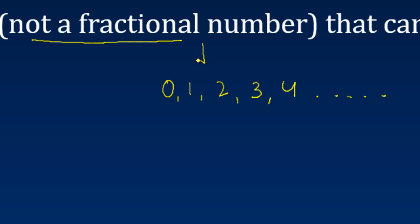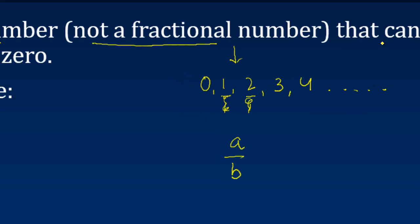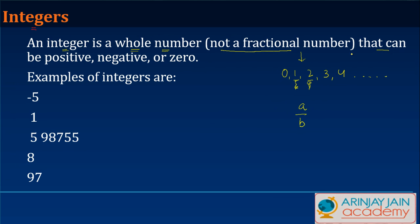In none of these cases are we talking about a fractional number, which is something like a upon b. Obviously, one can also be written as one upon one, two can be written as two upon one, but technically it's not in that sense — it's not a fractional number.